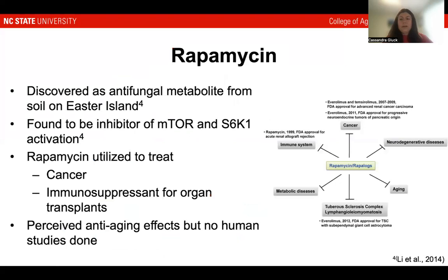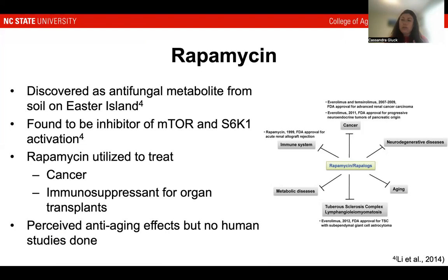Next I wanted to discuss rapamycin specifically. It is an FDA-approved drug, first discovered on Easter Island in soil samples as an antifungal metabolite. It has been found to be an inhibitor of mTOR and S6K1 activation, which is also a serine-threonine kinase. Rapamycin has been used to treat a variety of issues like cancer, and it has been used as an immunosuppressant for organ transplant patients. It has perceived anti-aging effects from some studies done in mice, but no human studies have been done yet. From this figure, you can see a couple different functions that rapamycin can affect, including cancer, immune system, and metabolic diseases.